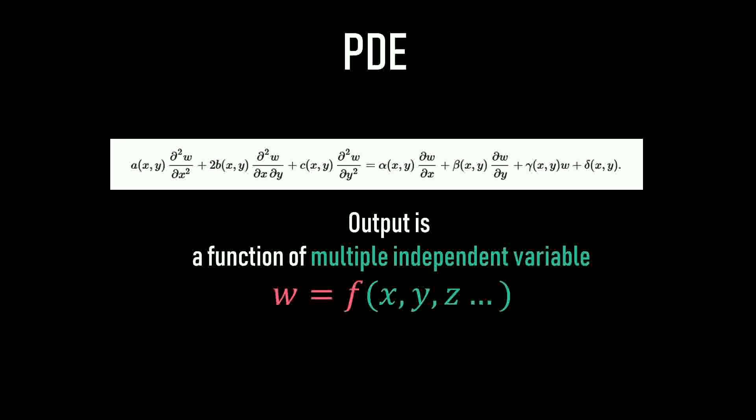A function could have any independent variables. So w is a dependent variable depending on these x, y, z. For example, in a static problem, the displacement is different at different points, so displacement is a function of the location where you want to find it out.